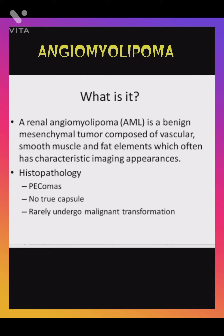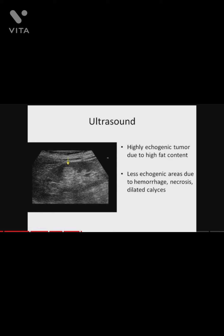A renal angiomyolipoma, AML, is a benign mesenchymal tumor composed of vascular, smooth muscle, and fat elements. It is characterized by its imaging appearance — basically, the angiomyolipoma is a highly echogenic, rounded, ball-like tumor due to its high fat content.